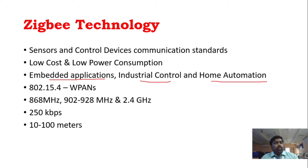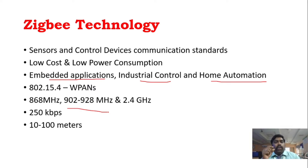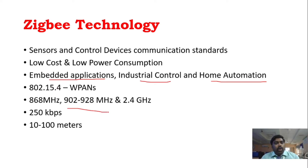The Zigbee standard is 802.15.4. The working bands are 868 MHz and 2.4 GHz. It has the lowest data rate at 250 kbps and a range of 10 to 100 meters. Its greatest advantage is low power consumption compared to other wireless technologies.